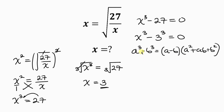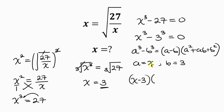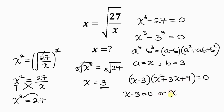Comparing what we have here with the formula, our a is x and our b is 3. Writing the expression in this form: we have a minus b, which is x minus 3, times a squared plus ab plus b squared — that is x squared plus 3x plus 9 — equal to 0. So we have two cases: x minus 3 equals 0, or x squared plus 3x plus 9 equals 0.